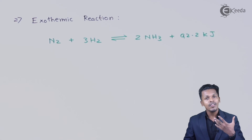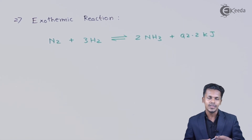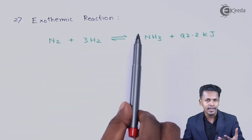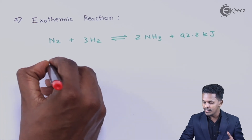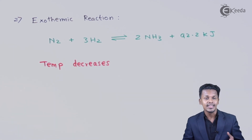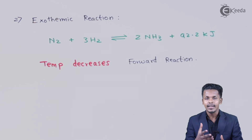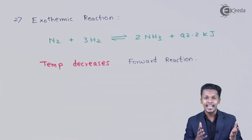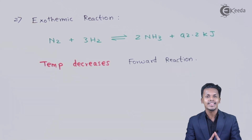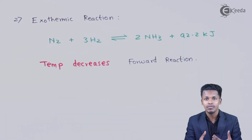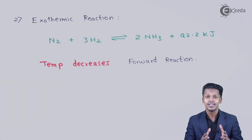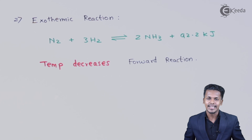To obtain a maximum amount of NH₃, we must decrease the temperature. When temperature is decreased, according to Le Chatelier's principle, equilibrium is maintained and two moles of NH₃ are obtained in maximum amount. So for exothermic reactions, low temperature is used to get maximum product. In summary, for endothermic reactions increase temperature for a forward reaction, and for exothermic reactions decrease temperature for a forward reaction — it depends on the nature of the reaction.